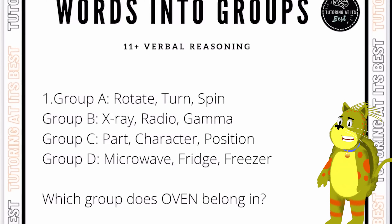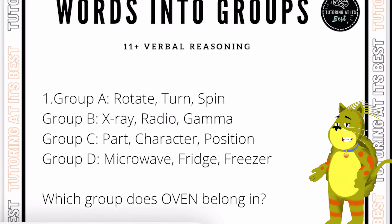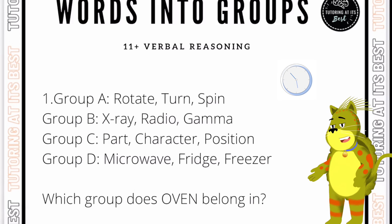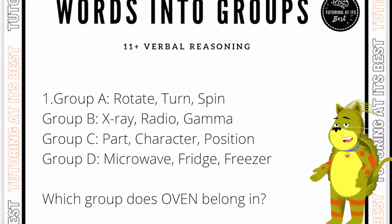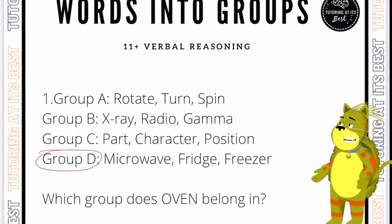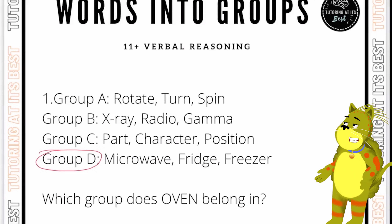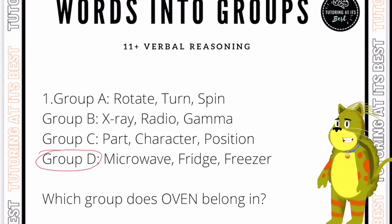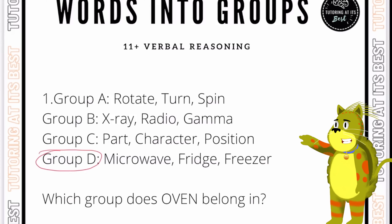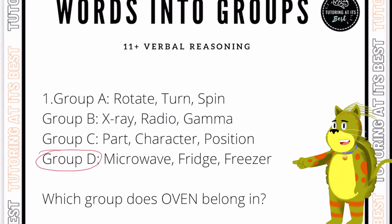We have four groups here and we're looking for the group where 'oven' would belong. If you chose group D, you are absolutely correct — all of the words in group D can be found in most kitchens, as can an oven, so it belongs in group D. If you were slightly confused with group B, remember the words in group B are all types of electromagnetic waves, which you'll learn about at school.